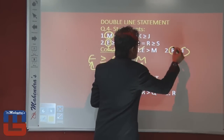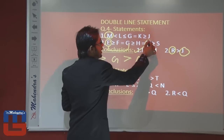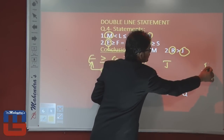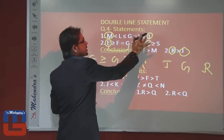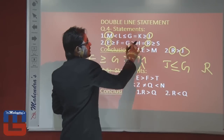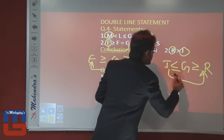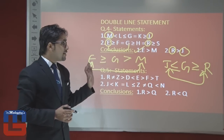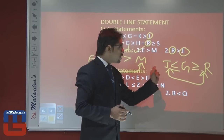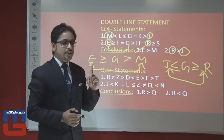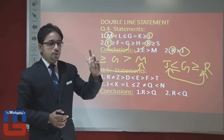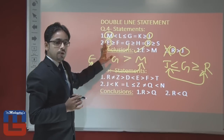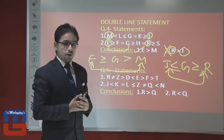For the second conclusion about R and J: R is in statement two, J is in statement one, and the common term is G. We find G ≥ J and G ≥ R. Since some symbols move left and some right between J and R, we cannot determine their relationship. The conclusion states only R > J, but that is not certain, so it is false. The right answer is only conclusion one follows.